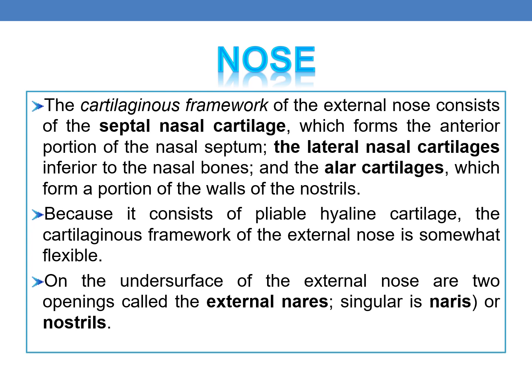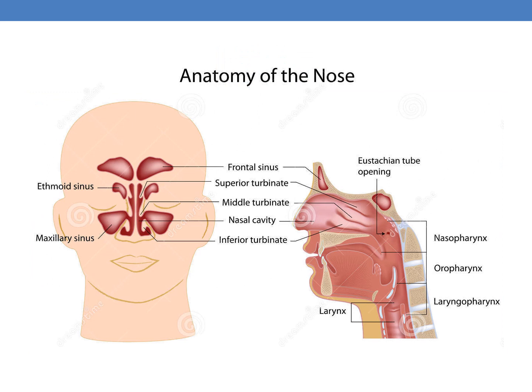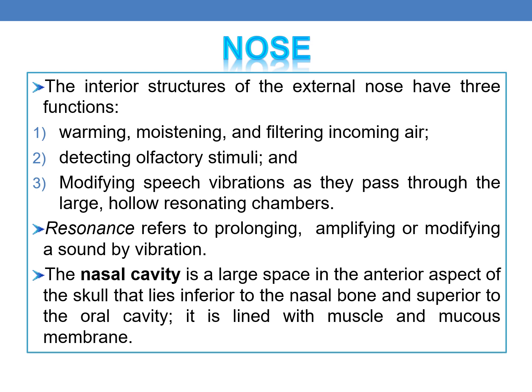On the undersurface of the external nose are two openings called external nares or nostrils. The interior structures of the external nose have three functions: warming, moistening, and filtering the incoming air; detecting olfactory stimuli; and modifying speech vibrations as they pass through the large hollow resonating chambers. Resonance is the prolonging or improving of sound by vibration.